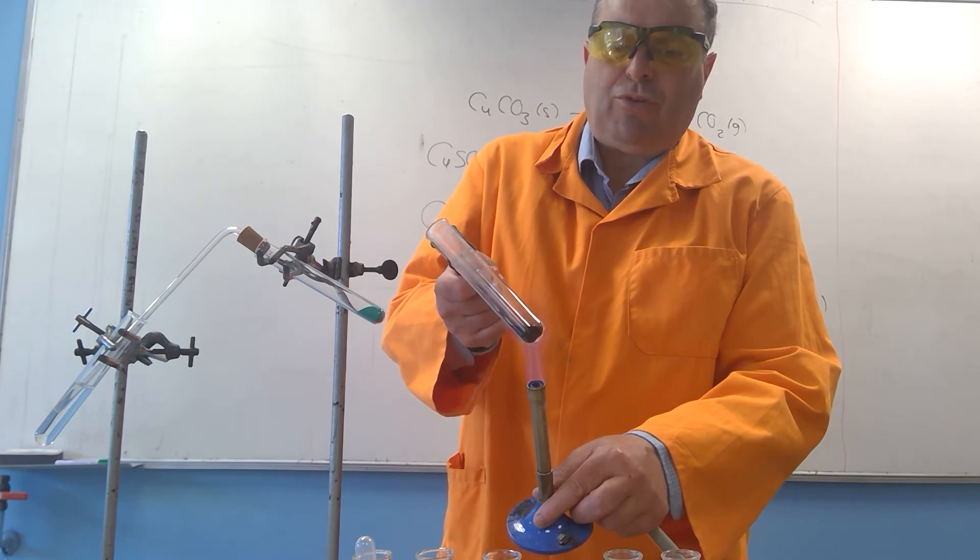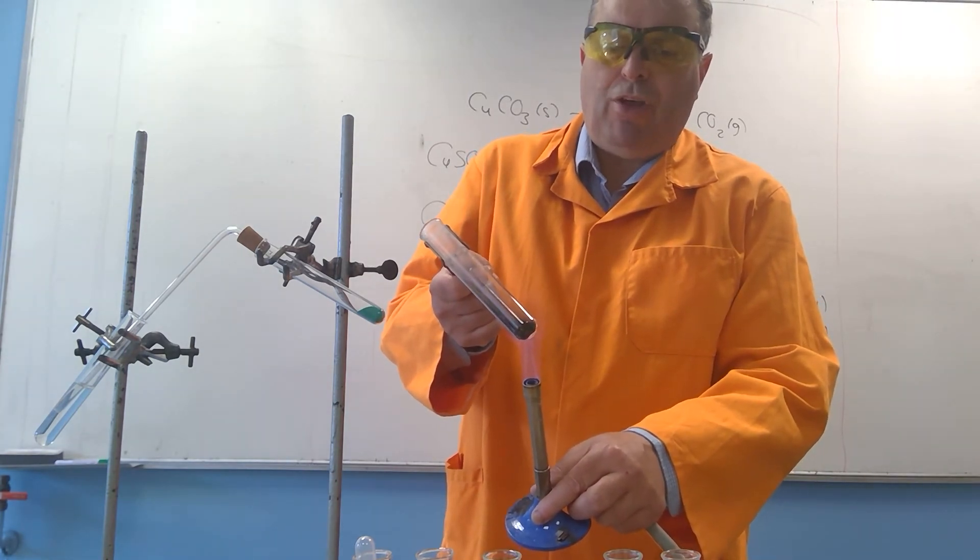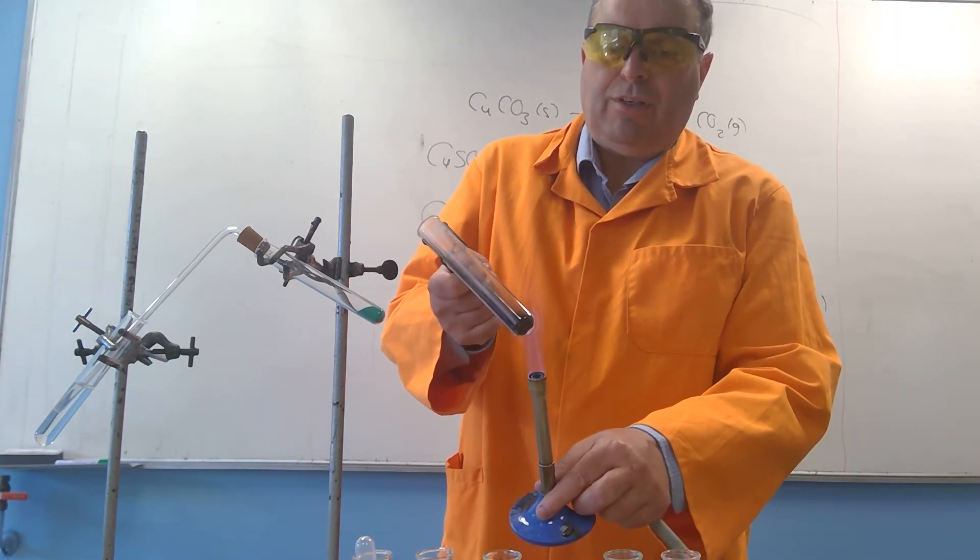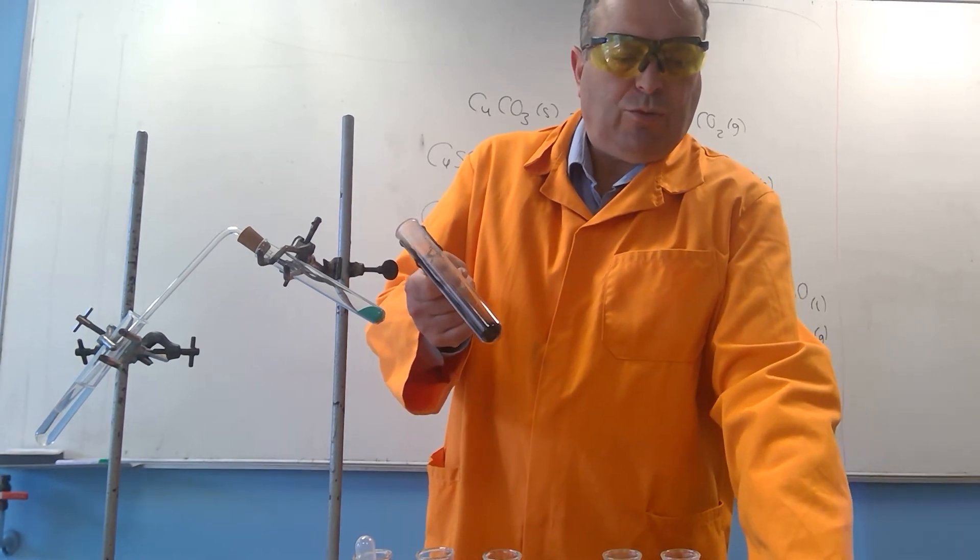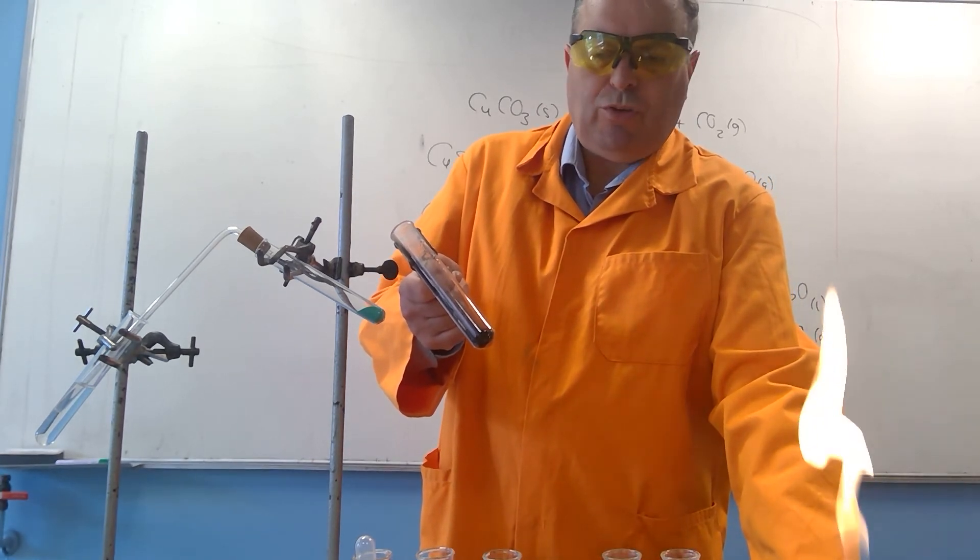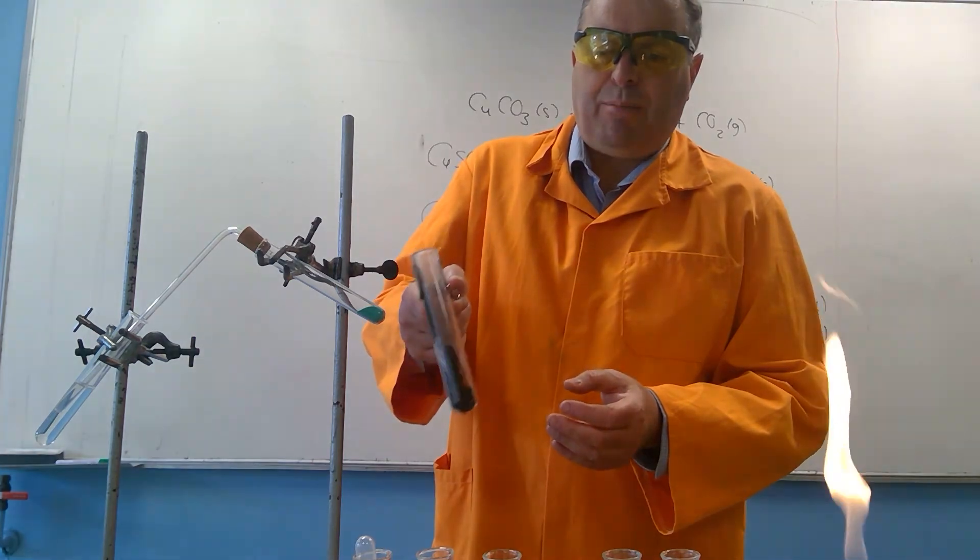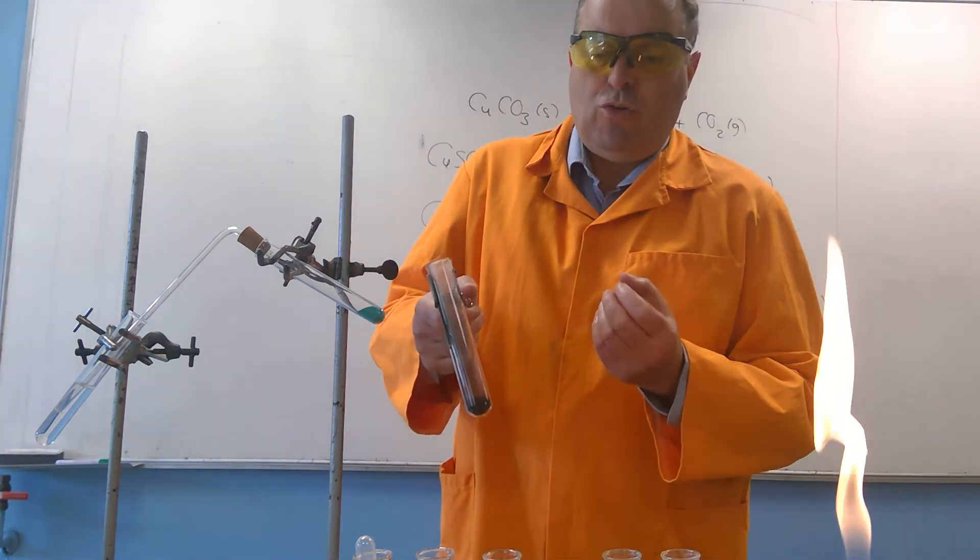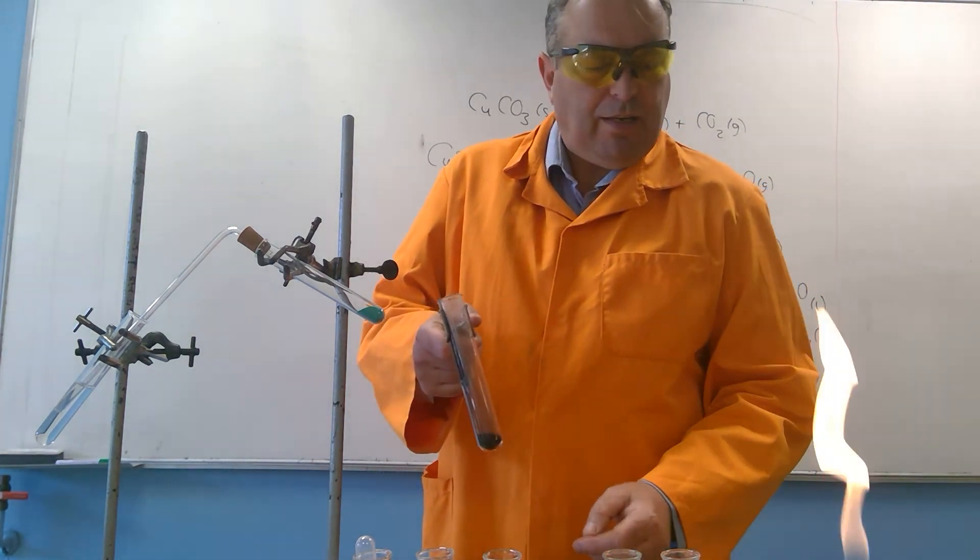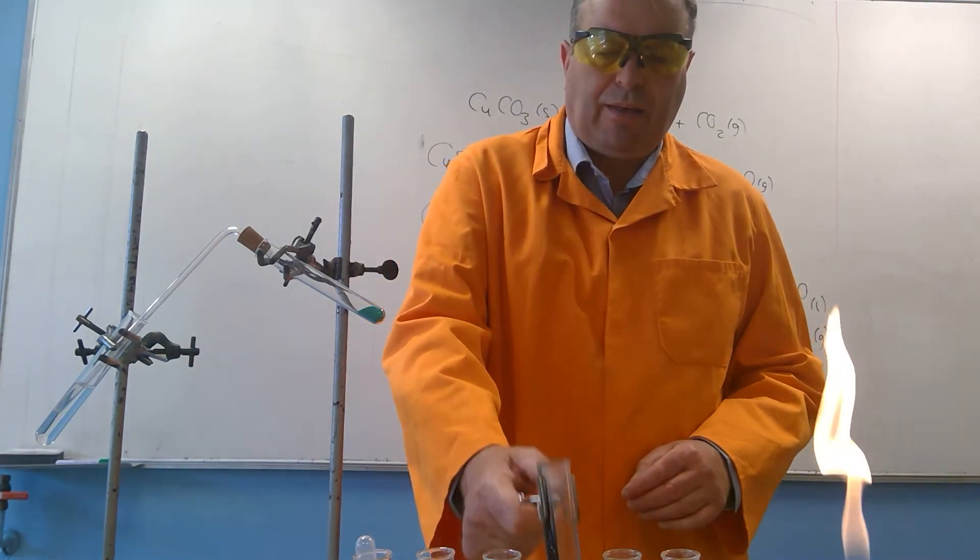So we're going to heat the copper 2 carbonate. It's going to thermally decompose—break down—and turn into copper 2 oxide. This is a classic example of one chemical forming two: the green chemical turning into the black chemical.